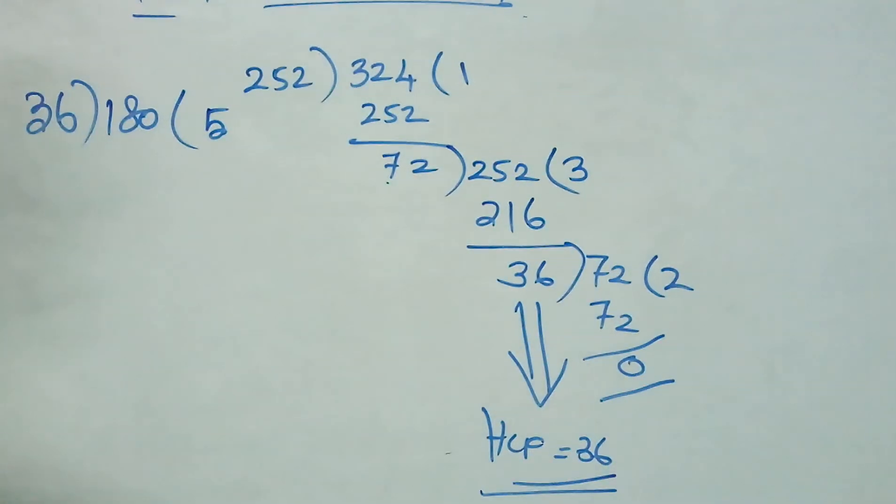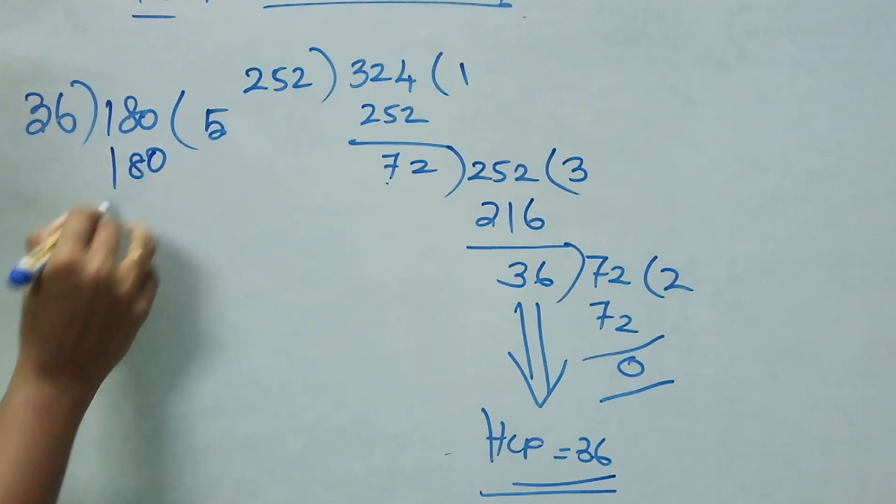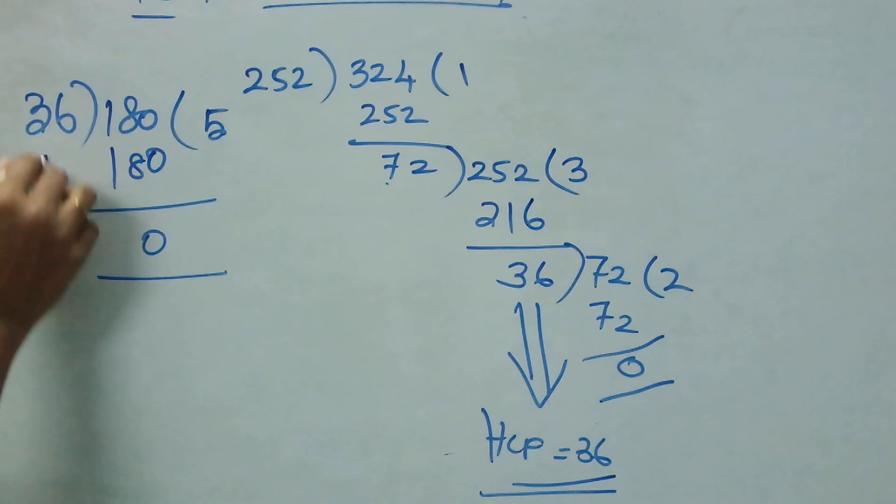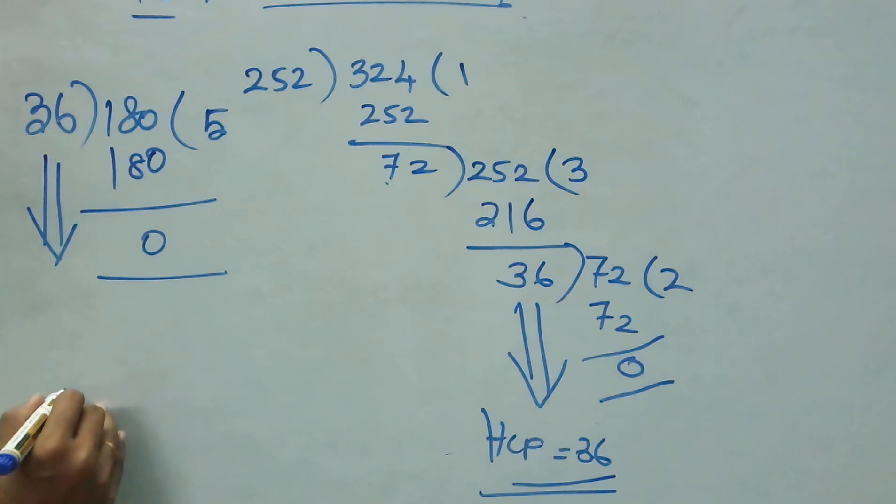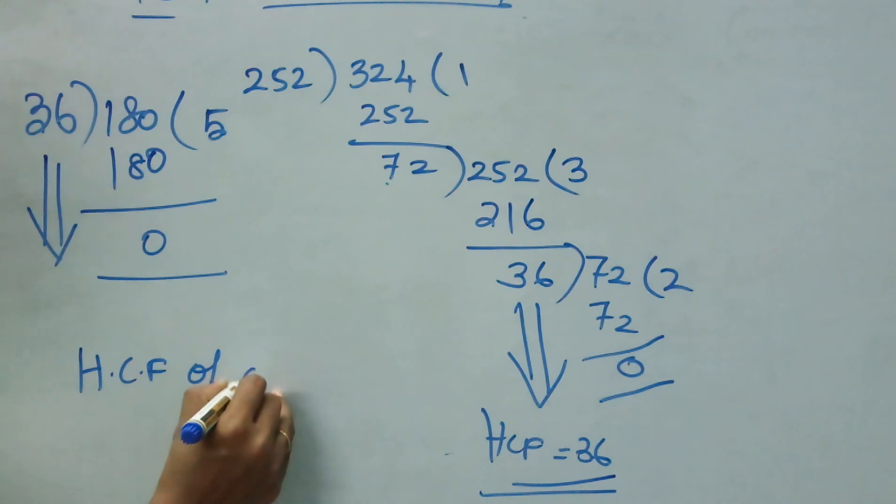6 5s are 30. 5 3s are 15. The carryover will become 18. Now, it exactly divides and now this 36 is HCF of all the three numbers.